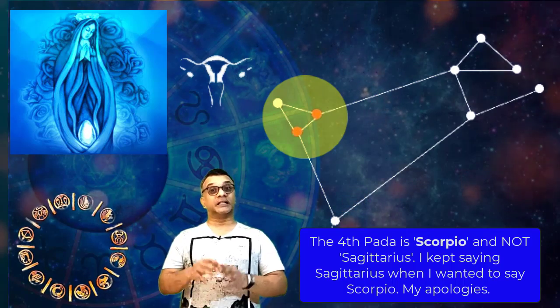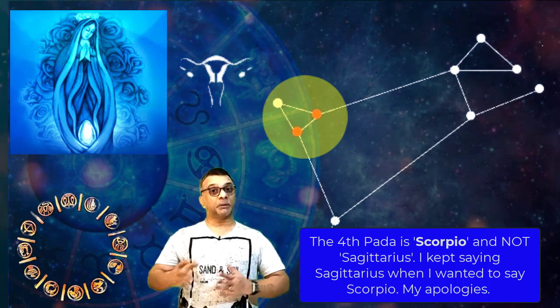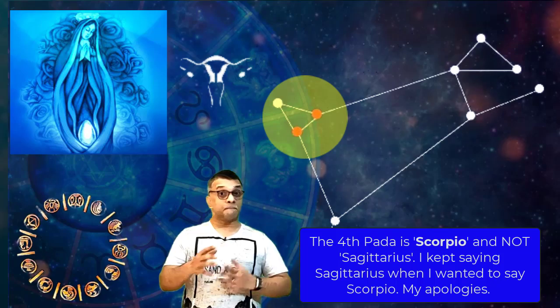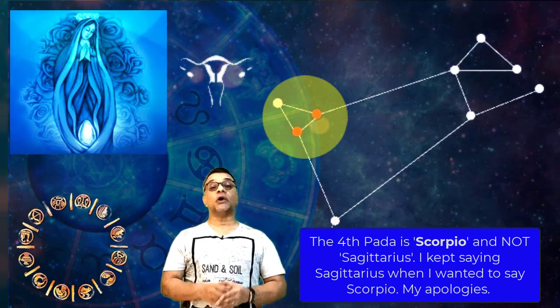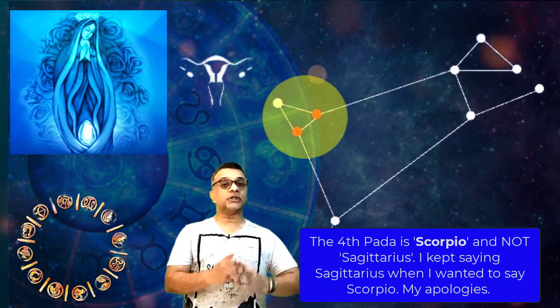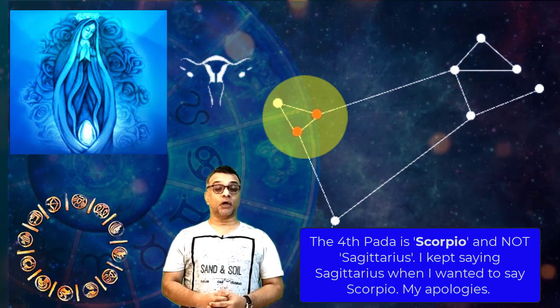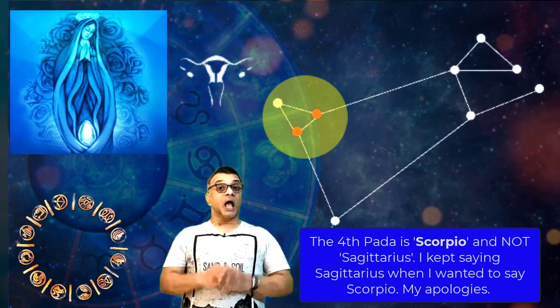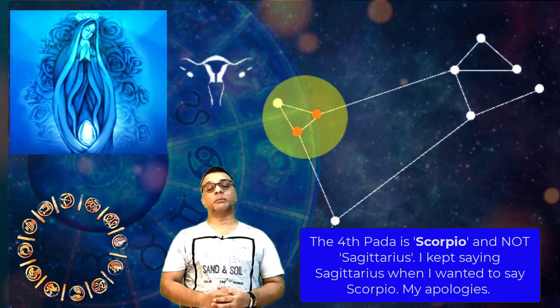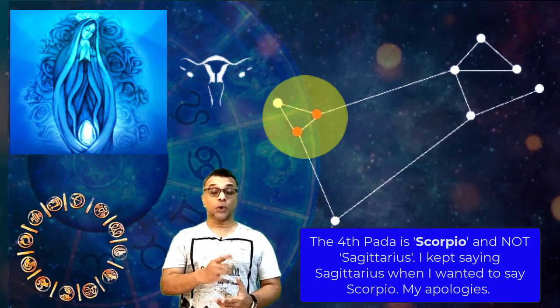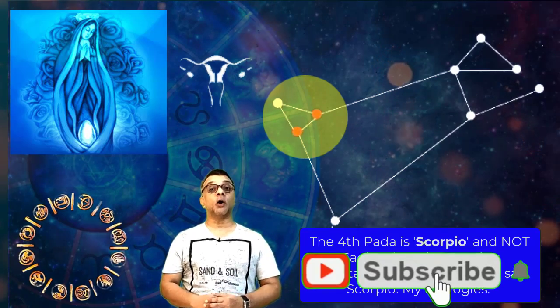So these are the four navamsa. Depending on which pada your nakshatra is lying or your moon is lying or the house degree is lying, accordingly that energy will manifest more. If the house energy is the degree at which the Bharani nakshatra is manifesting itself is the Leo energies, then this person will also show more organization, more leadership qualities.